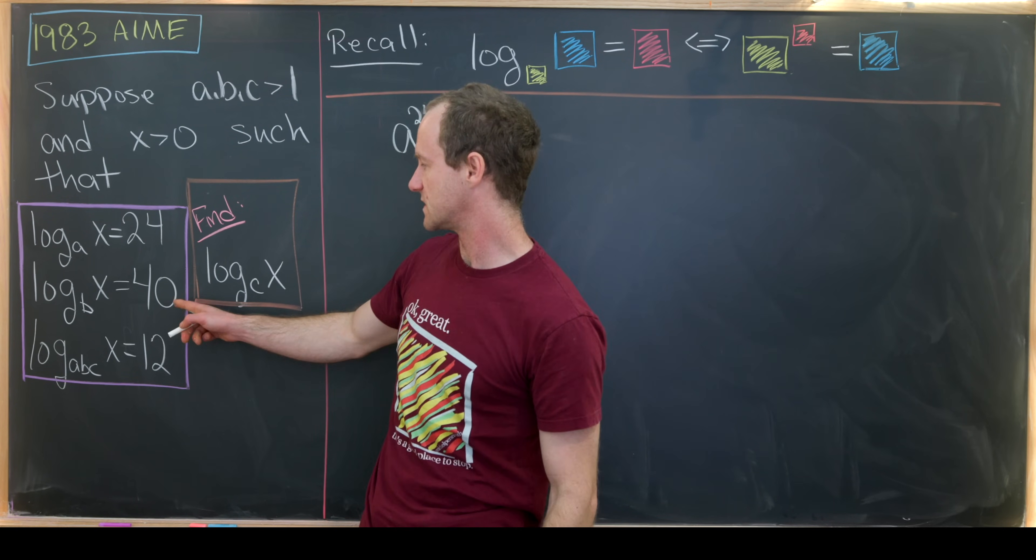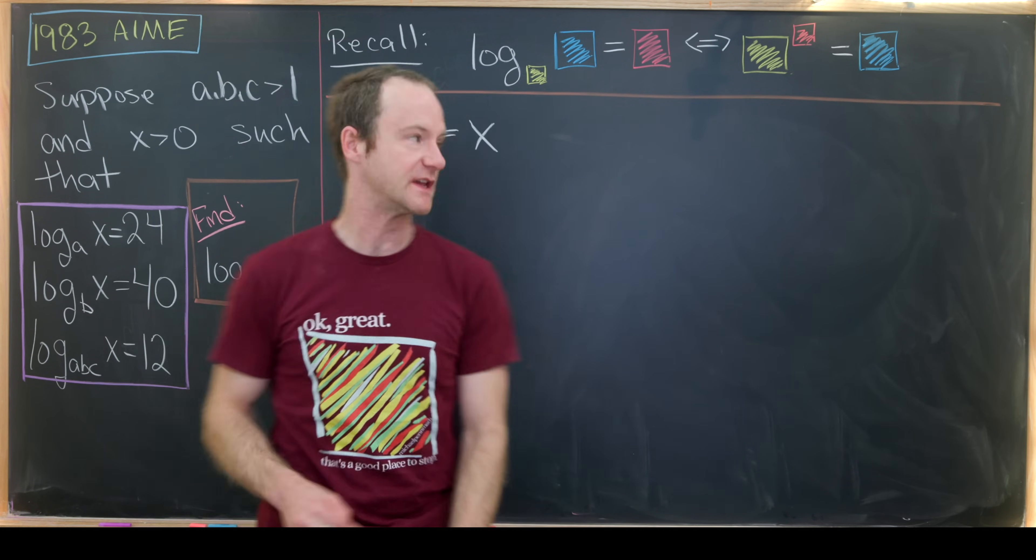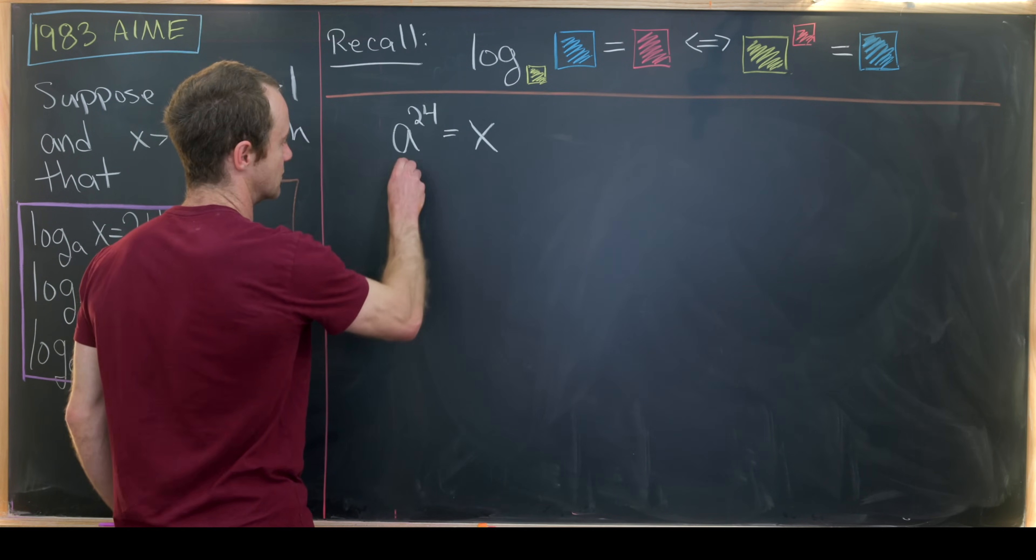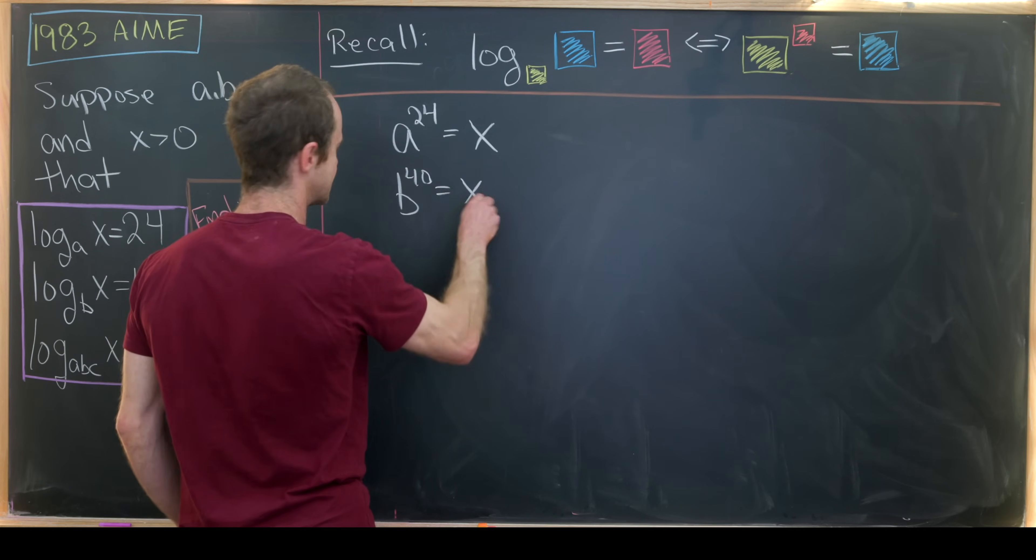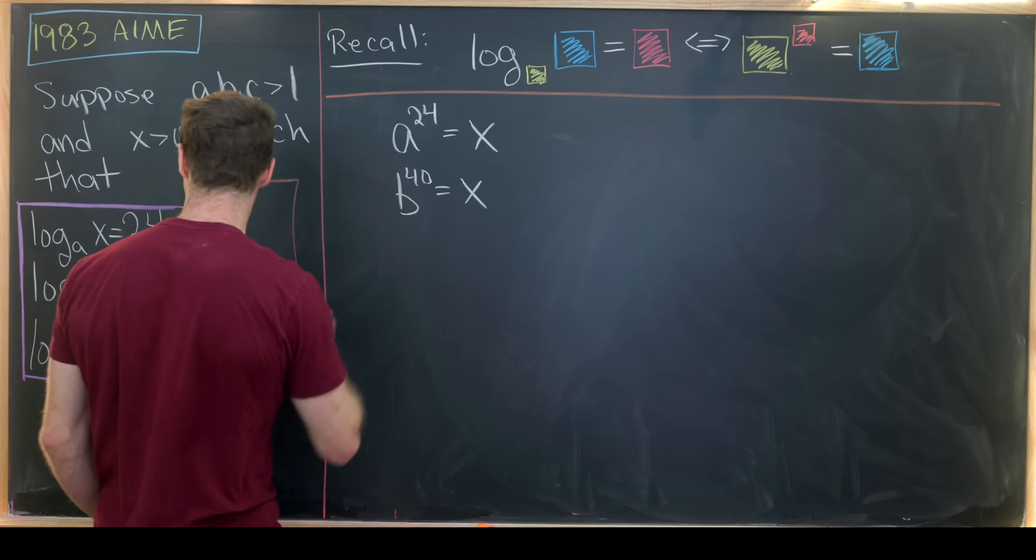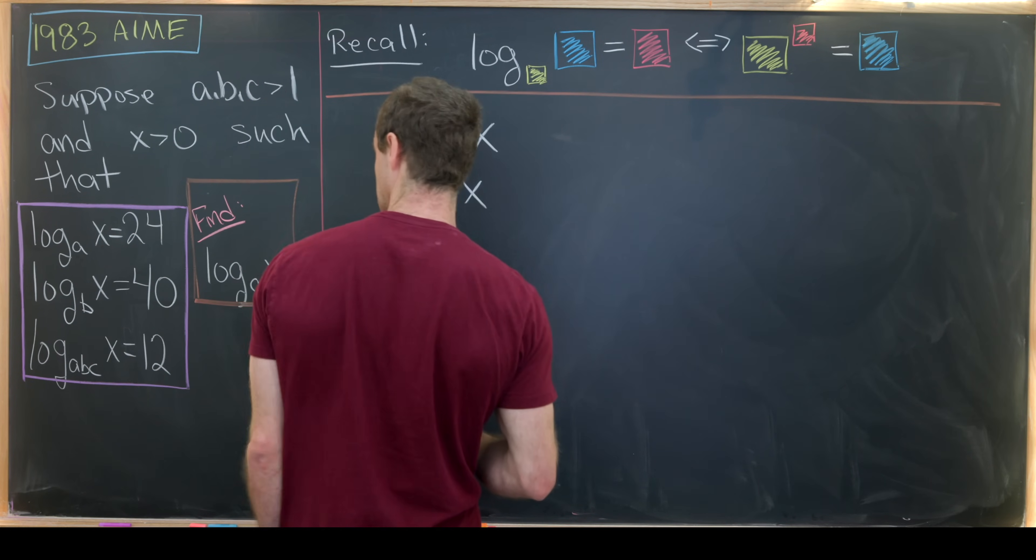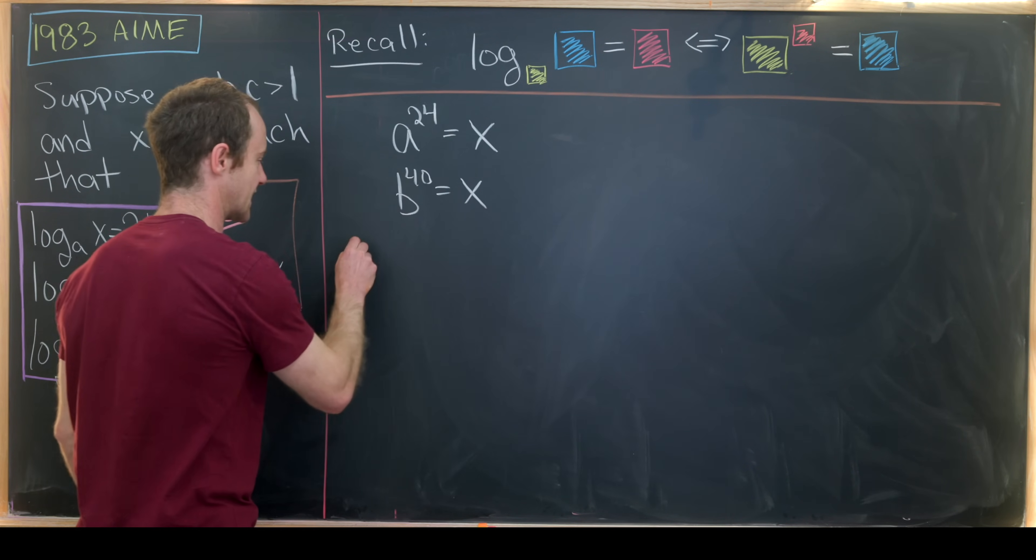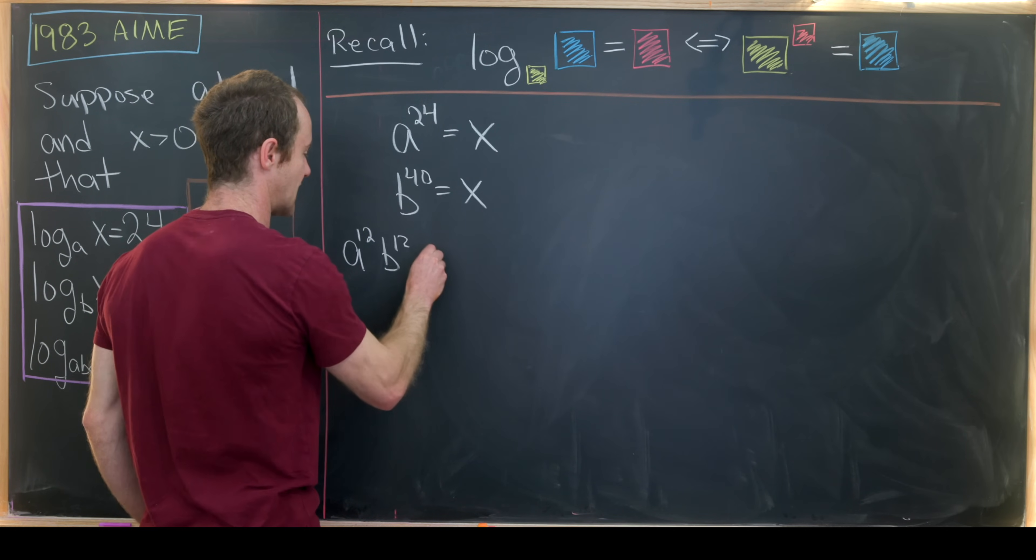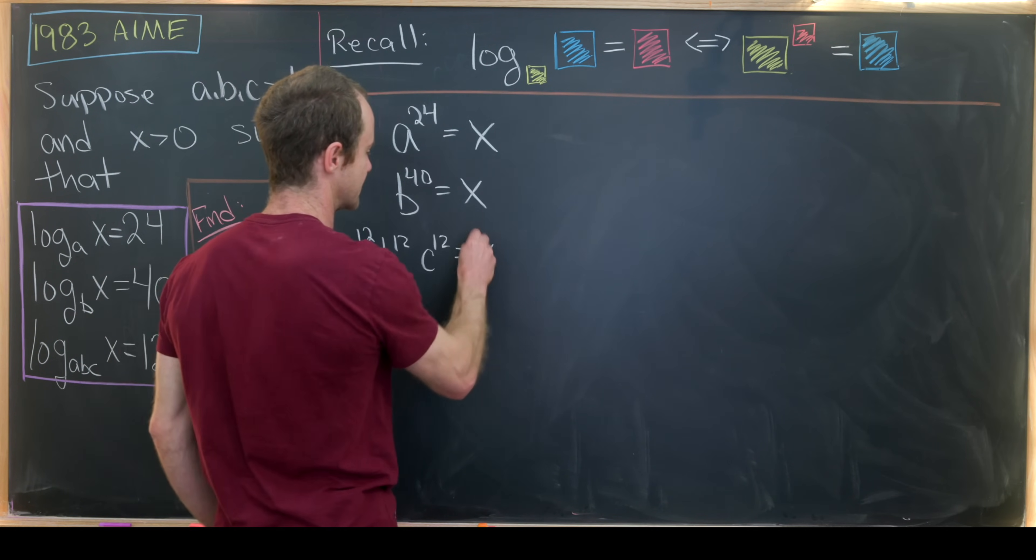Let's look at this other one. The second one says that B to the 40 equals X, so we got B to the 40 equals X. And then finally, this third one says that A times B times C to the 12 equals X. So I'll write that as A to the 12 times B to the 12 times C to the 12 equals X.